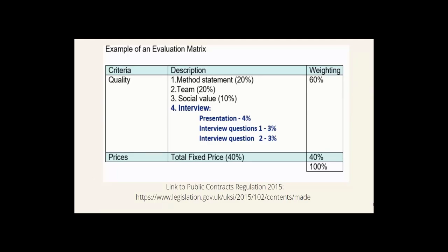Here is an example of an evaluation matrix which shows the breakdown of interview scores. The total allocation for interviews is 10% in this example and it is broken down as follows.